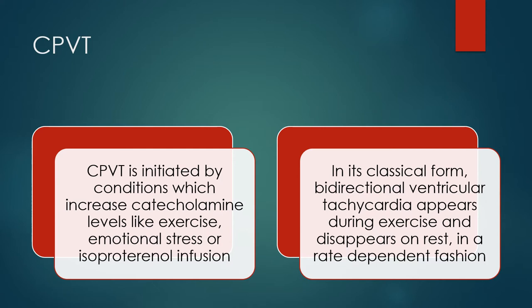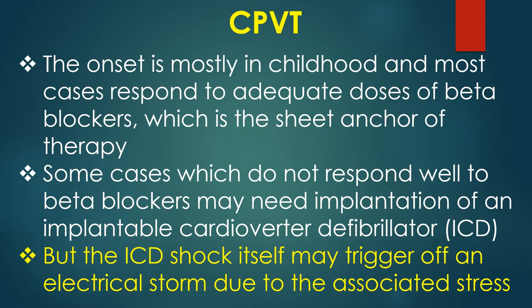CPVT is initiated by conditions which increase catecholamine levels, like exercise, emotional stress, or isoproterenol infusion. In its classical form, bidirectional ventricular tachycardia appears during exercise and disappears on rest in a rate-dependent fashion. The onset is mostly in childhood, and most cases respond to adequate doses of beta blockers, which is the sheet anchor of therapy. Some cases not responding well to beta blockers may need implantation of an implantable cardioverter defibrillator.